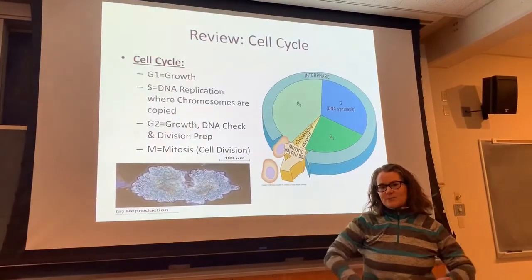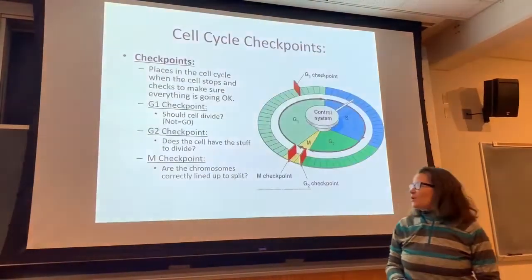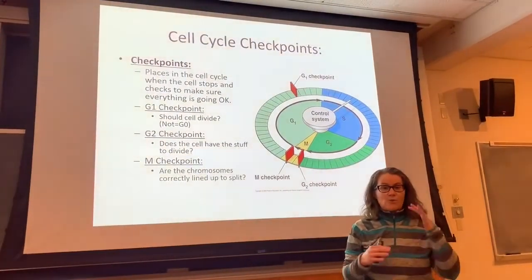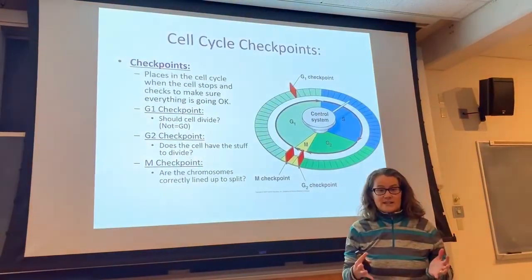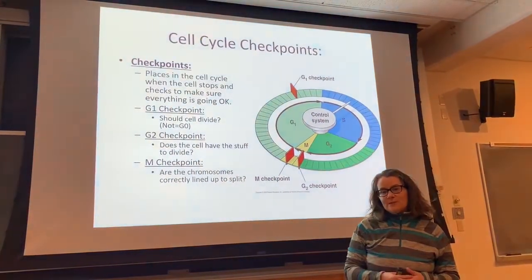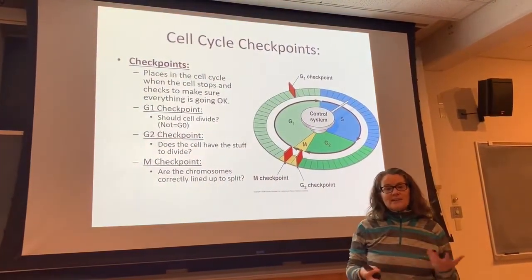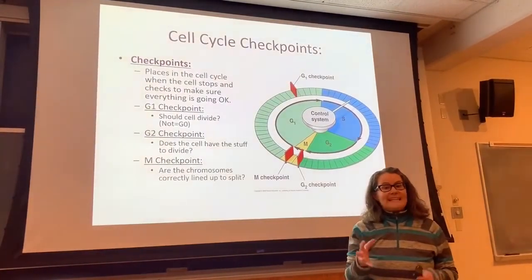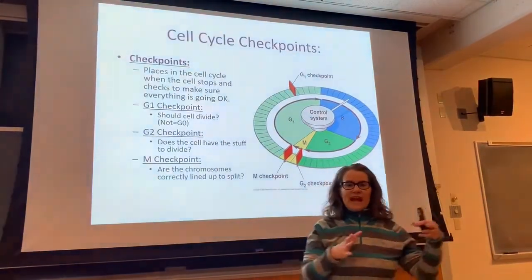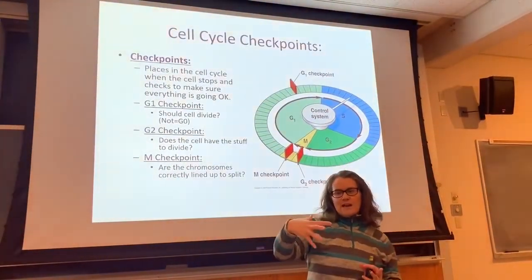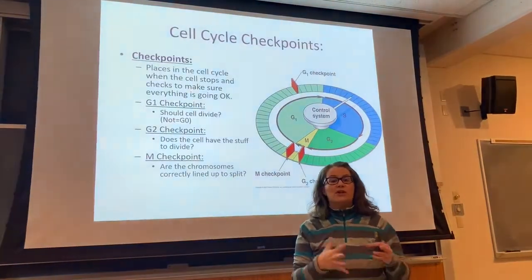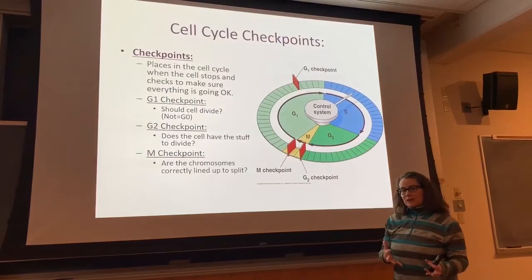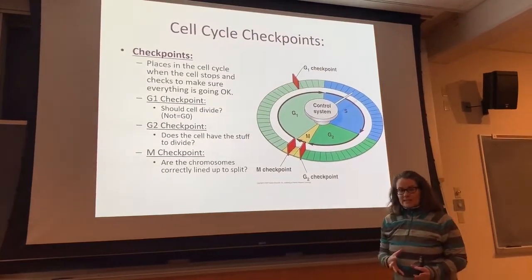Today I want to share with you how this process works. To get us started, I want to share the idea of what guides the cell cycle and what really controls the timing of division. There are lots of enzymes and proteins found in the cell that run checkpoints. These checkpoints are places where the cell is going to stop and decide whether it has the right nutrients, information, or organelles in order to go forward and divide.